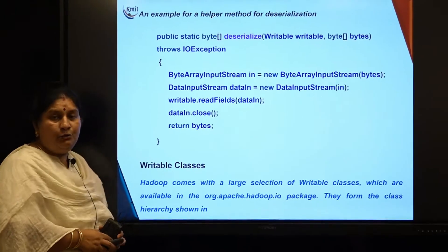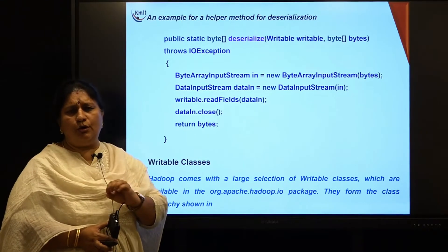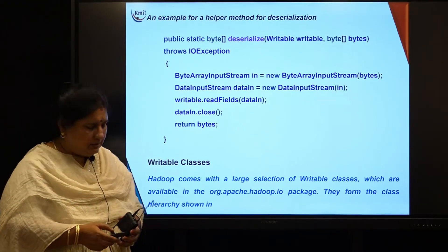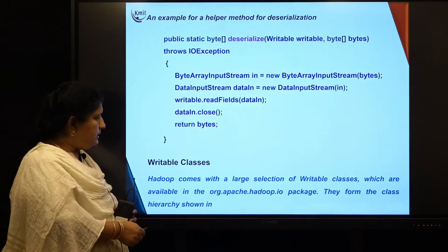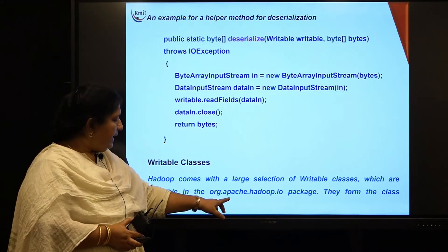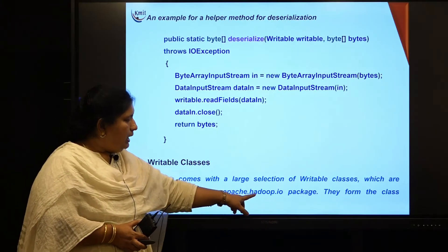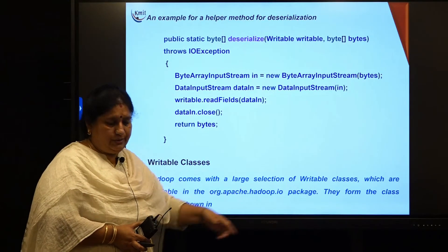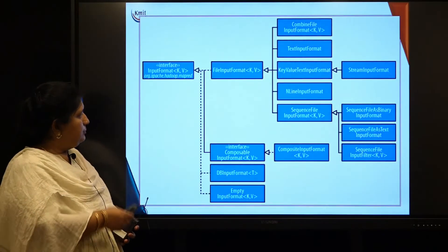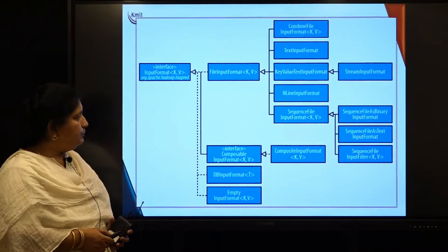Hadoop comes with various types of writable classes supporting almost all possible data types. All writable classes come from the package org.apache.hadoop.io. These are the various types of writables that Hadoop supports.